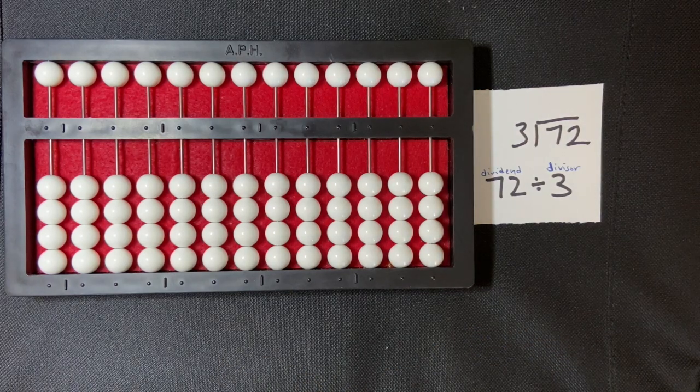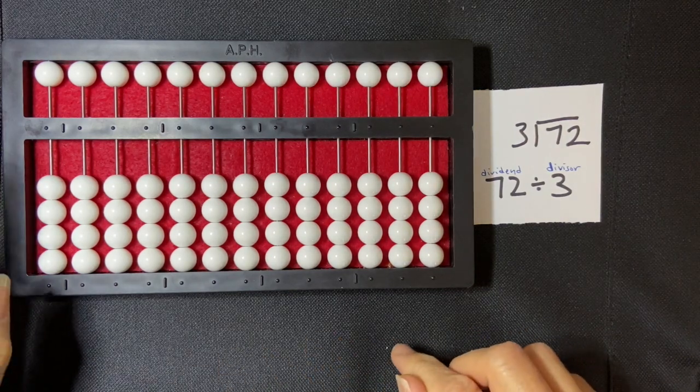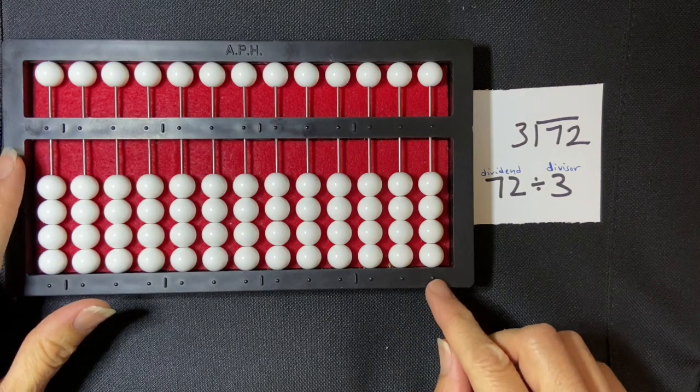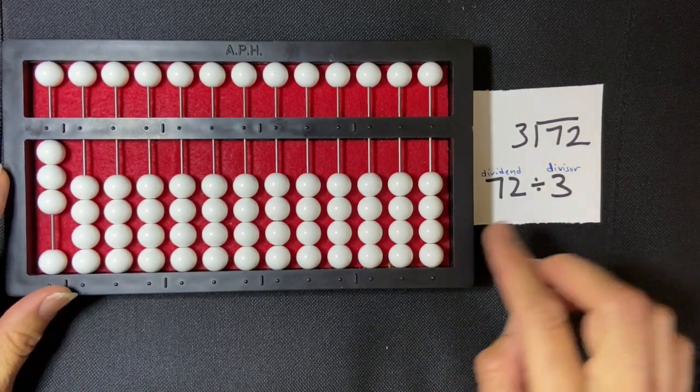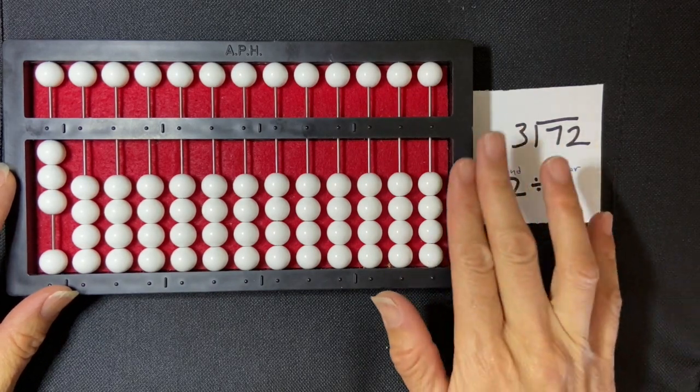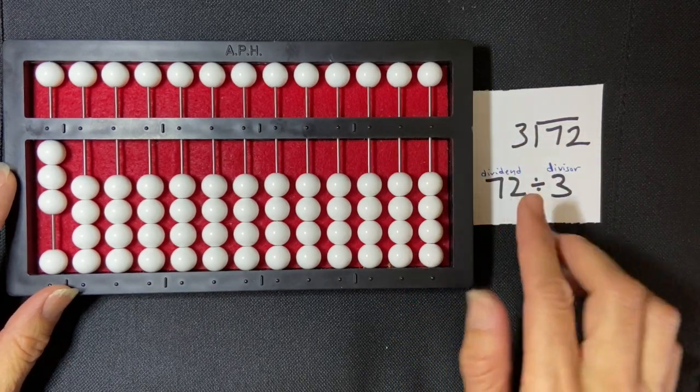So I'm going to start by setting my divisor on the extreme left of the abacus. So one, two, three is my divisor. I'm going to set my dividend on the extreme right of the abacus, so it's 72.